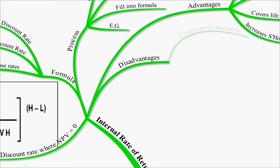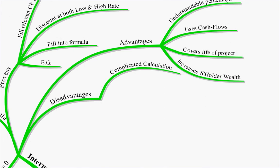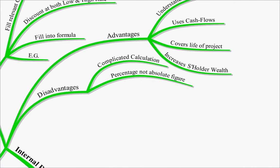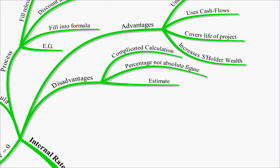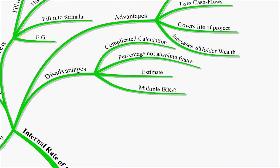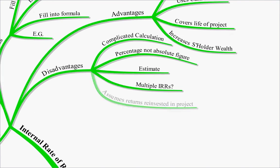Disadvantages though, well it's a complicated calculation, takes a bit of time to do. It's a percentage, not an absolute figure like NPV. Also, based on estimates again, you may get multiple internal rate of returns over the course of a project, depending on when you do the calculation. And it assumes that the returns are reinvested in the project, when in fact they may be reinvested in other areas of the business.